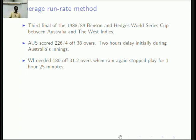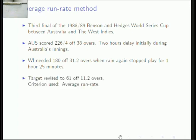Around 20 overs — you're supposed to bowl about 15 overs in an hour, so that's roughly 20 overs lost. From 31.2 overs, 20 overs were docked off and West Indies was asked to score something in the 11.2 overs that were left. They used the Average Run Rate method — 226 over 38 overs gives a run rate, and removing 20 overs worth of runs gives a revised target of 61 off 11.2 overs.